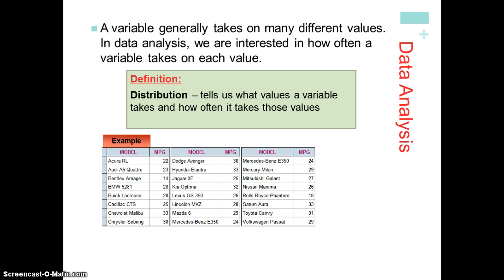Here we have an example of cars and the miles per gallon as one of the characteristics of the car. We notice we have two different variables. The individuals are the Acura, the Audi, the Bentley, the BMW, the Buick LaCrosse, etc. — those rows are the individuals. The columns represent our variables: we have a categorical variable, which is the model name, and a numerical variable, which is the miles per gallon.